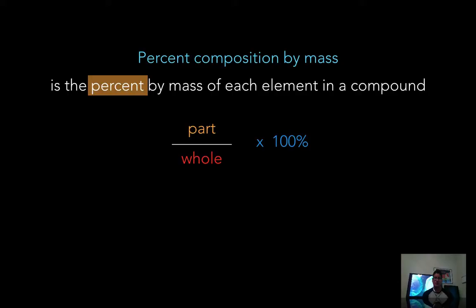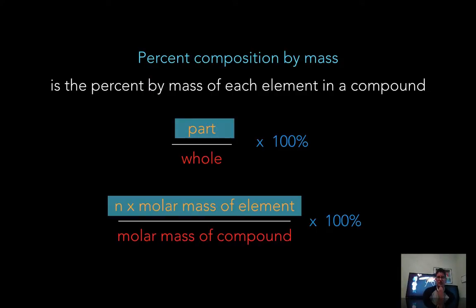So let's take a look at this. We're dealing with the idea of a percent by mass. If you go back to your algebra days, you know that a percent is part over whole times 100, and that gives you a percent. So our part for this particular percent by mass equation is n times molar mass of an element.